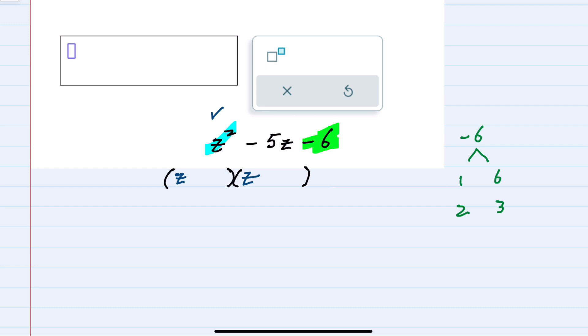And since my goal is to get minus 6, then I know that the signs have to be different. If this is a positive 1 this would need to be a negative 6, or if this was a negative 1 I would need to multiply by a positive 6. The same thing for 2 and 3. If the 2 were positive the 3 would be negative. If the 2 were negative the 3 would be positive.